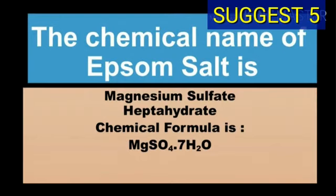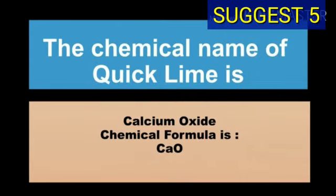The chemical name of Epsom salt is magnesium sulfate heptahydrate and chemical formula of Epsom salt is MgSO4·7H2O.